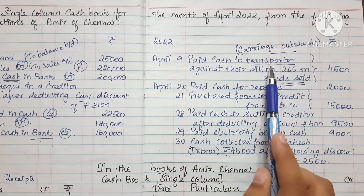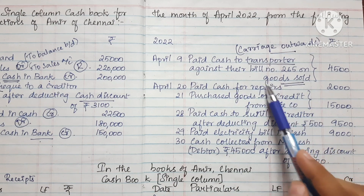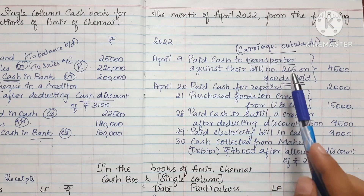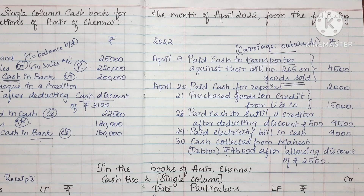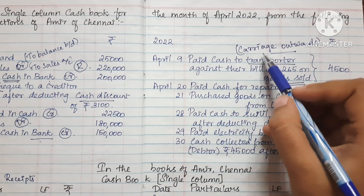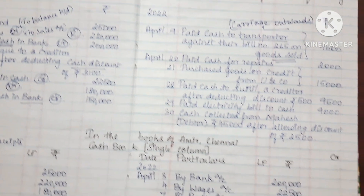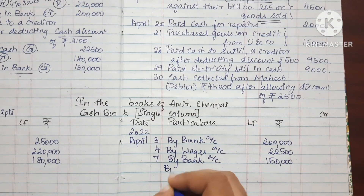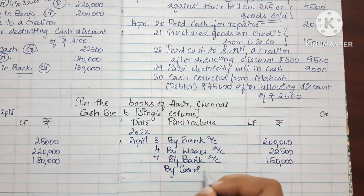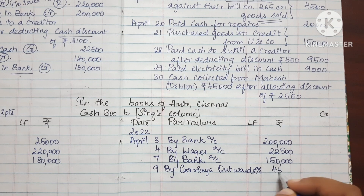On the 9th, we paid cash for transport against bill number 265 on goods sold. We record the carriage outwards. The entry is: By Carriage Outwards Account. The amount is Rs. 4,500.